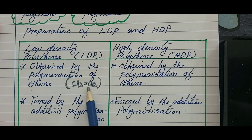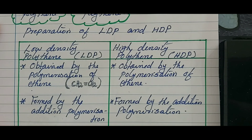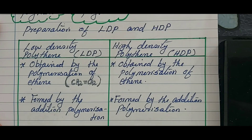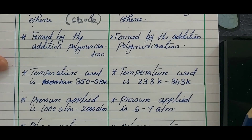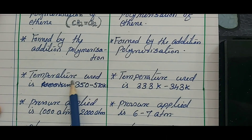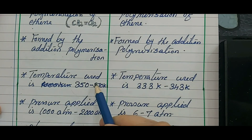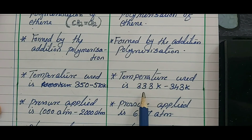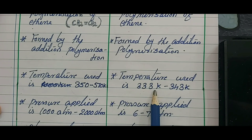Both are formed by addition polymerization of ethene. Now we can see some differences. The temperature range to prepare low density polythene is 350 to 570 Kelvin, but for HDP it is a little less — 333 Kelvin to 343 Kelvin.